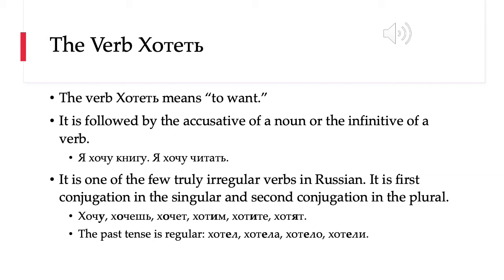The tricky thing about хотеть is not the constructions we use it with, but the fact that it is one of the very few truly irregular verbs in Russian. In the non-past tense, it is first conjugation in the singular — and not just first conjugation, but first conjugation with a consonant mutation and a stress shift — and second conjugation in the plural.